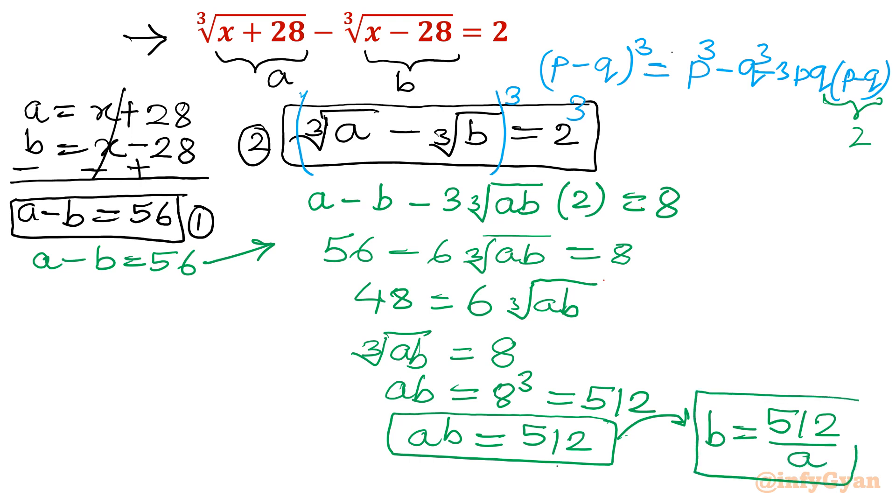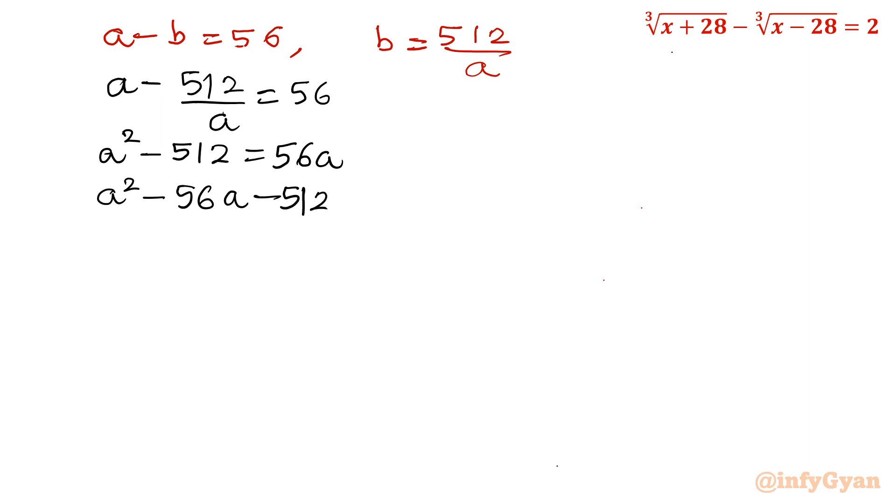From equation 2, I will collect b is equal to 512 divided by a. This value I will put in equation 1. So a minus b is 56. And b equal to 512 over a. Now let's put the value. So a would be as it is, a minus 512 over a equal to 56. Multiply this equation with a. A square minus 512 equal to 56a. Take all the terms to left hand side. A square minus 56a minus 512 equal to 0.